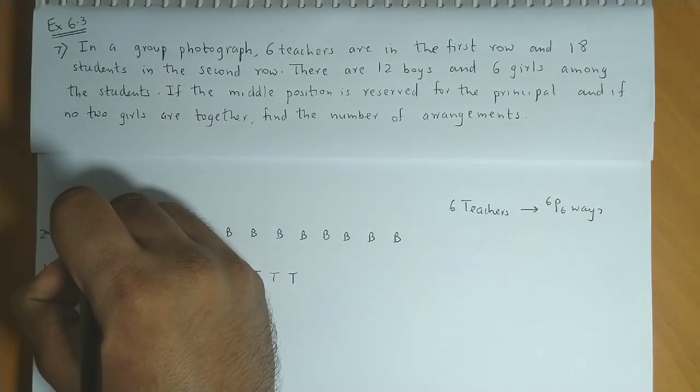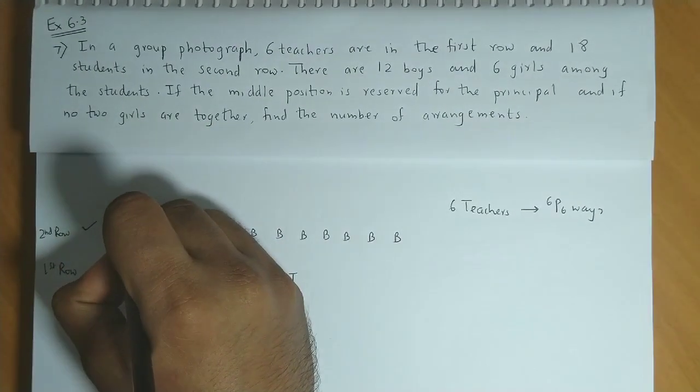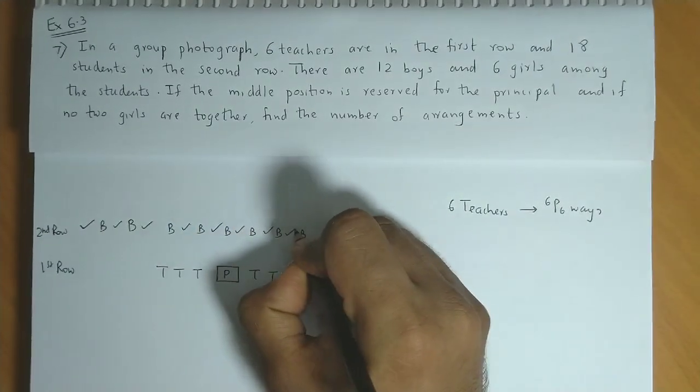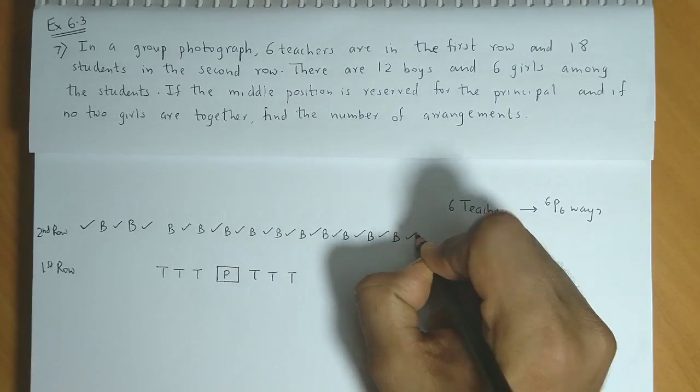So boys around, if you see, how many options are available? Or how many seats are available? You have 1, 2, 3, 4, 5, 6, 7, 8, 9, 10, 11, 12, 13.